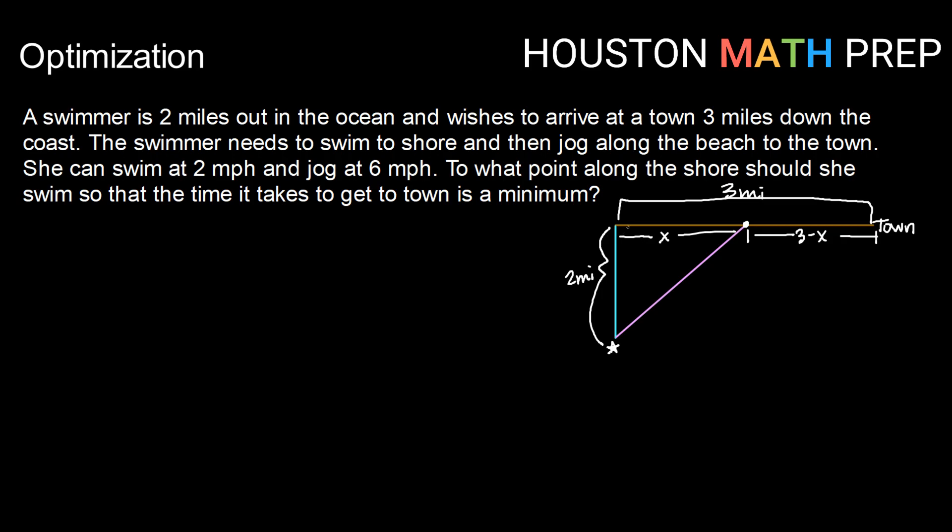Also, we have a right triangle here. So if we needed an expression for the distance she would swim, we could use two squared plus x squared equals this value. And if we solve for that, we get the square root of x squared plus two squared, or four. So this distance here that she would need to swim would be the square root of x squared plus four.